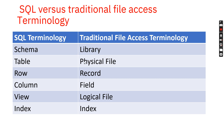The physical file in IBM i is called a table in SQL terminology. The record in IBM i is called a row. The field is called a column, and the logical file is called a view.